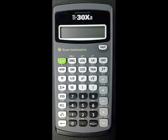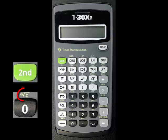The cube root, or third root, has its own button. It is the second function of the 0 key.